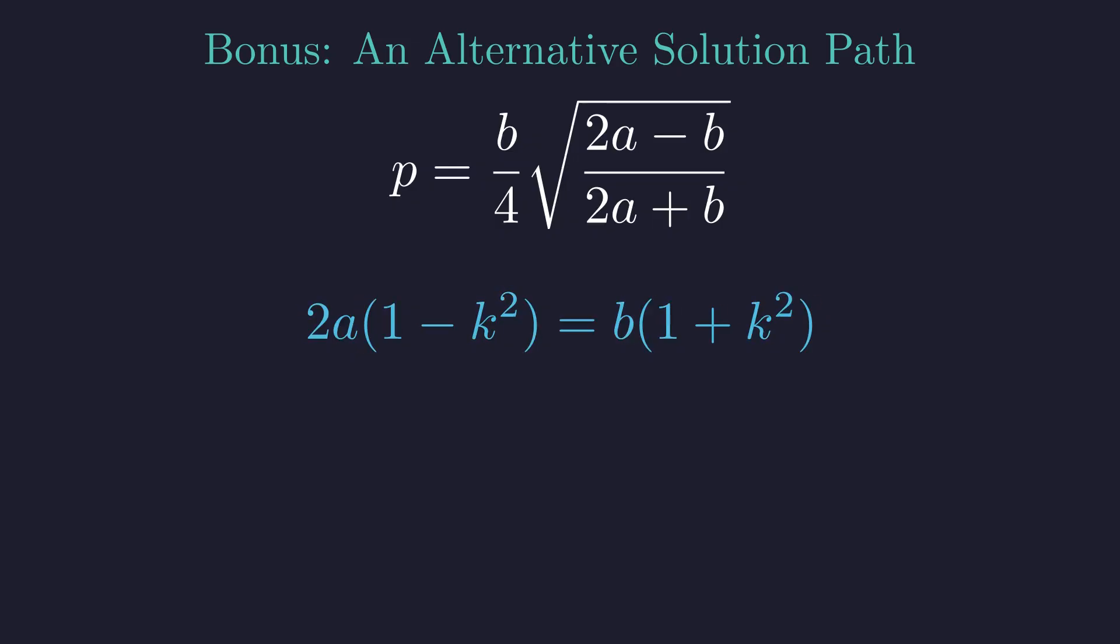Notice the structure here. 1 minus k squared on the left, 1 plus k squared on the right. This is the key to the parameterization. Dividing gives us the ratio of 2a to b in terms of our parameter k.